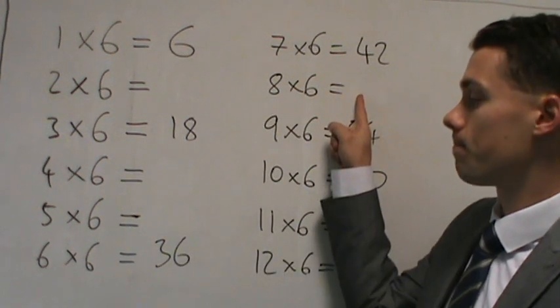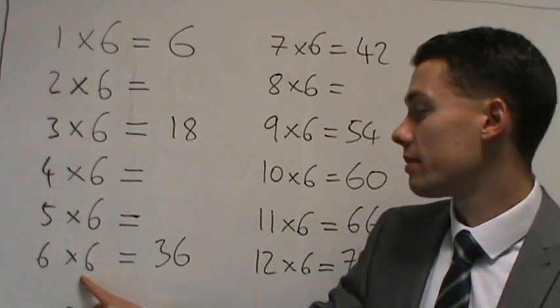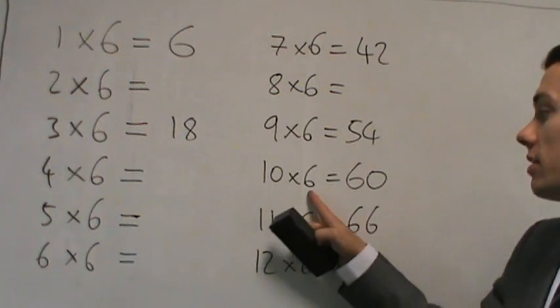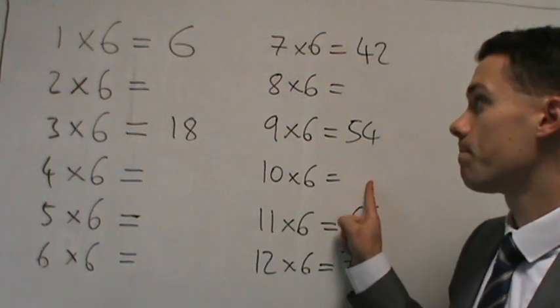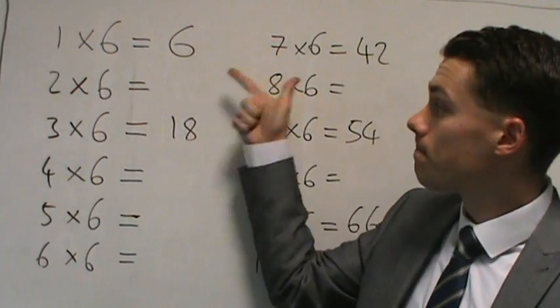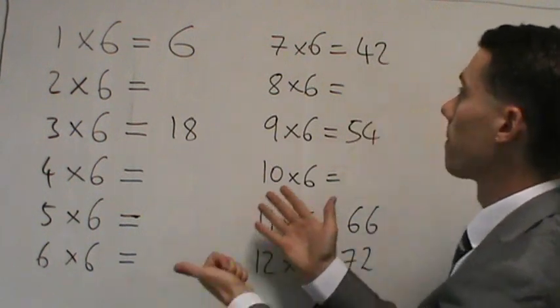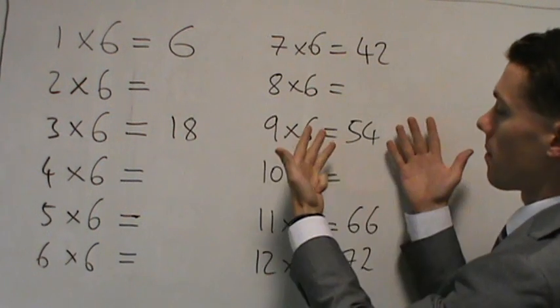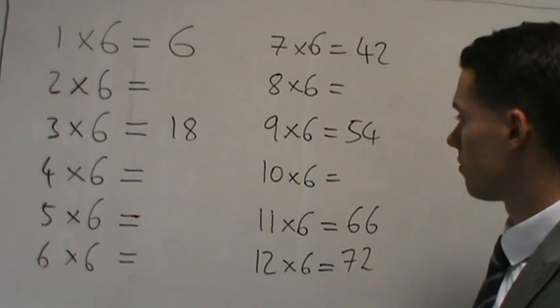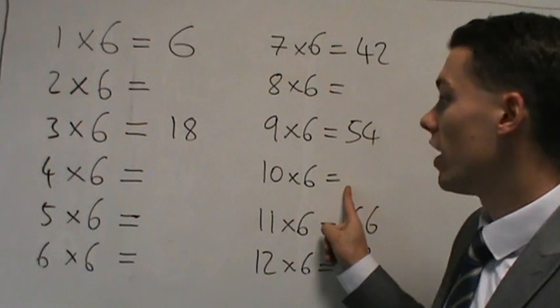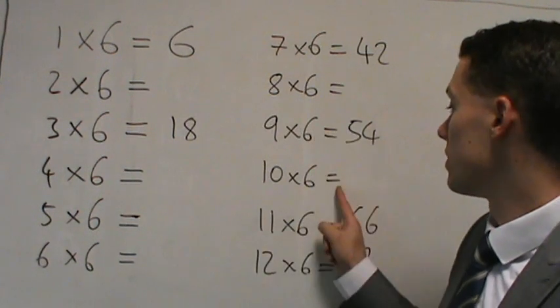So I'm going to rub out two more now. I'm going to rub out 6 times 6 which is 36 and 11 times 6 which is 66. So let's try again. So that's how much you got, I said that one by mistake, but hopefully for the other ones you got 12, 24, 30, 36, 48, and we said that one was 60 already.